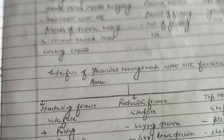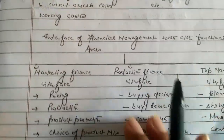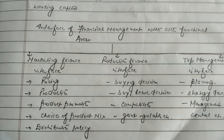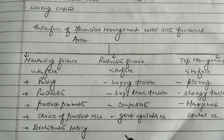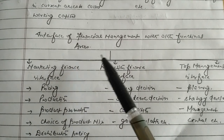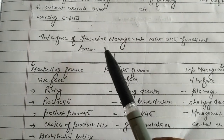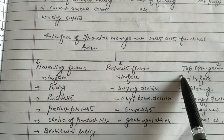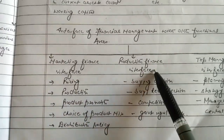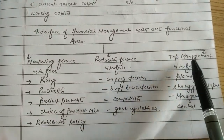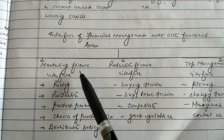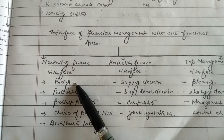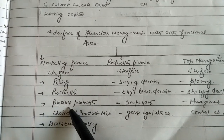Now come to the interface of financial management with other functional areas. Business activities mainly concern production, marketing, and top management decision processes. We correlate the firm activities of financial management with three activities of business management: the Marketing-Finance interface, Production-Finance interface, and Top Management interface. In the Marketing-Finance interface there is pricing, which relates to financial management.